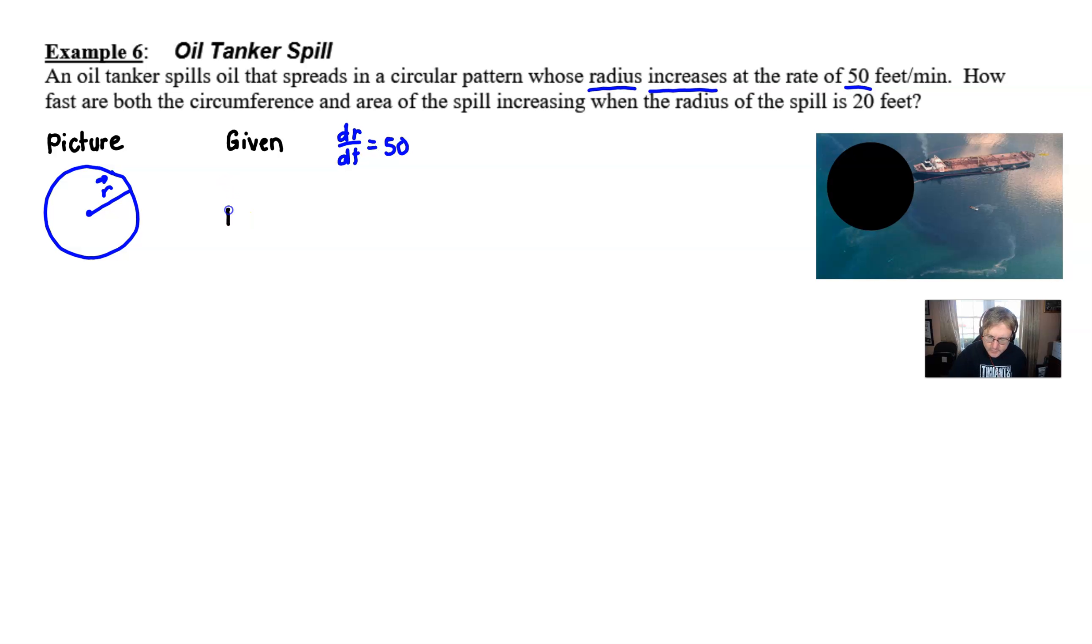Okay, well then what are we trying to find? Well I think there's two things that we're finding. I think we've got a part A and a part B. In one of the parts we want to find the rate of change of the circumference, dC/dt, and then we also want to find the rate of change of the area, dA/dt, and in both cases we want to do so at the moment that the radius is 20.